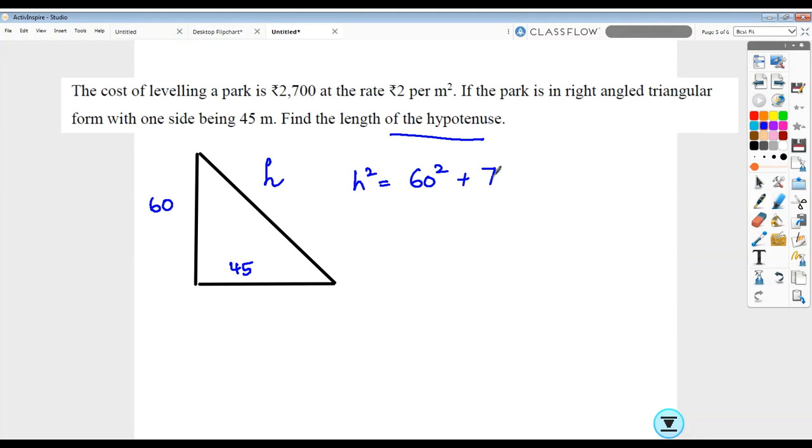This becomes 3600 and this is 2025. I've just applied how to calculate the squares ending with 5. So h square would be 5625.